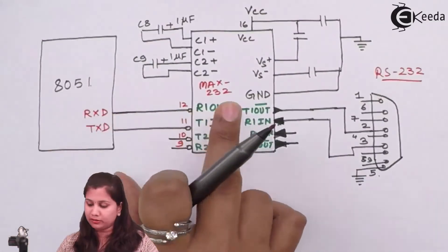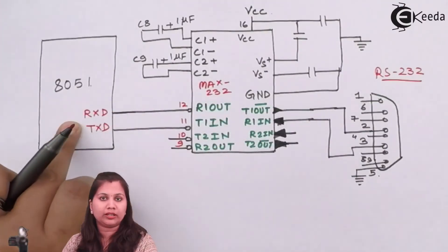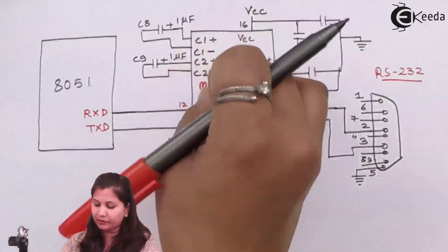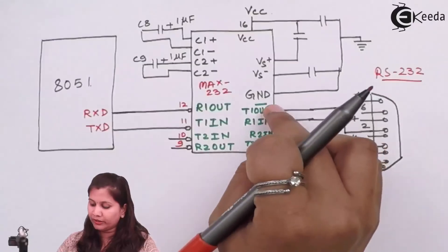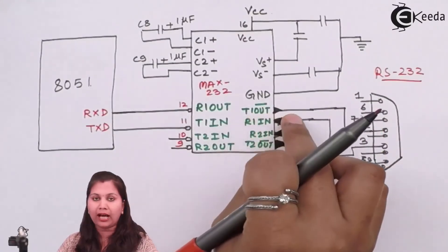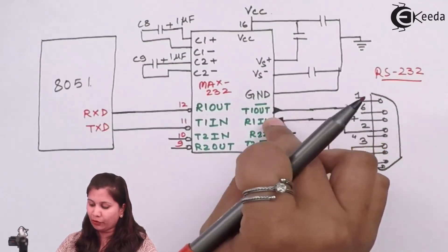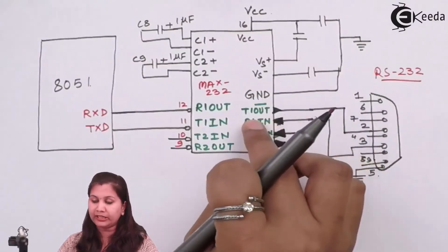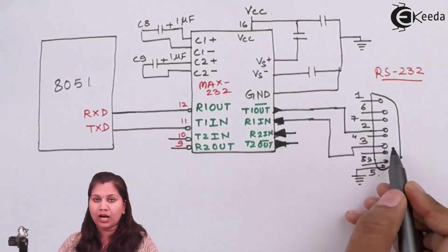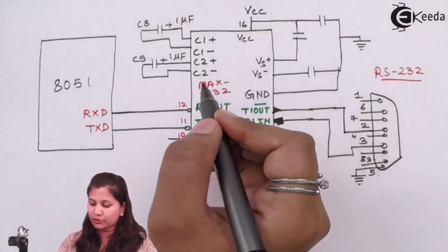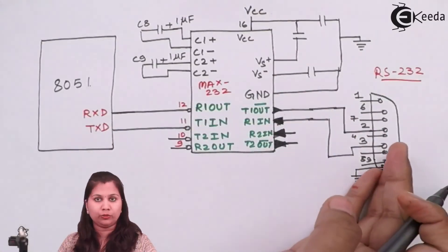When the 8051 is receiving data, the received data is provided to it from MAX232. When it is transmitting data, MAX232 receives the transmitted data at T1 In and then gives this data to the RS-232 cable via T1 Out. For receiving, MAX232 receives data from RS-232 at R1 In and passes it out via R1 Out to the 8051. So MAX232 converts the TTL signals into RS-232 compatible signals and vice versa.